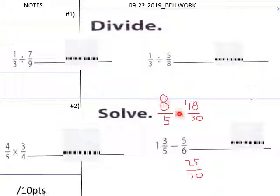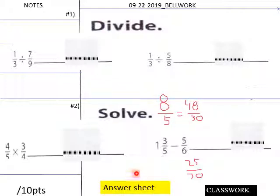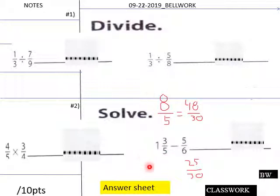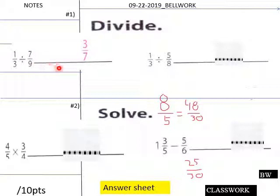We're getting ready to do our bell work. Teachers, give your students about three to four minutes for these division, multiplication, and subtraction problems. Looks like some of this is already done for you — students, your lucky day. Three to four minutes.